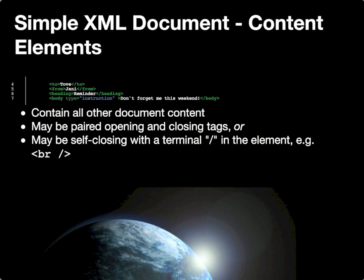In contrast to the root element, we have content elements, which essentially contain all of the other document content. They occur between the opening and closing tags of the root element. Content elements may be paired opening and closing tags, or in some instances they may actually be self-closing — meaning there is basically a single opening bracket, the name of the element, any other attributes, and then a slash and the closing bracket as a way to mark the end of a self-closing content element.